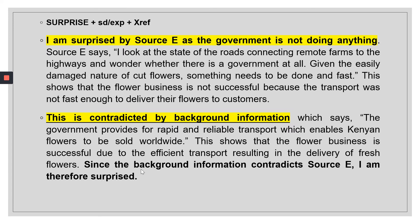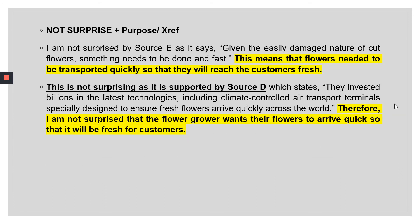Sample answers: 'I am surprised by Source E because it shows the government is not doing anything' — give the source details, explain them, and cross-reference something opposite, such as background information showing the government is actively investing. For 'not surprising': Source E says flowers need to be transported quickly, so cross-reference Source D, which confirms that ensuring freshness of flowers is critical.